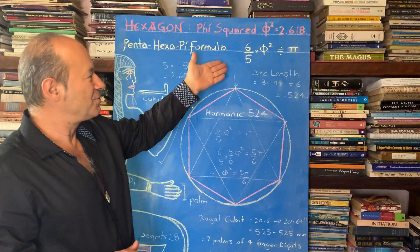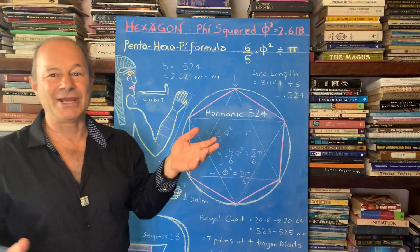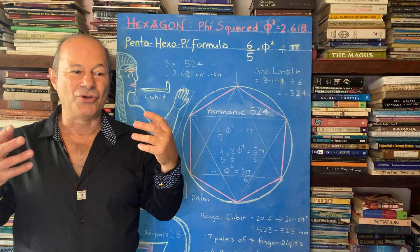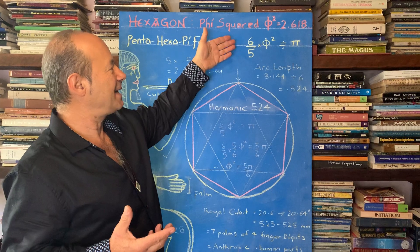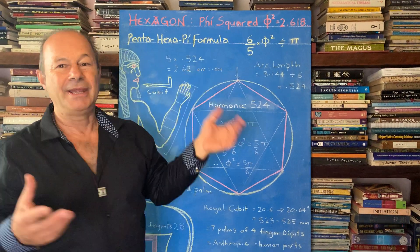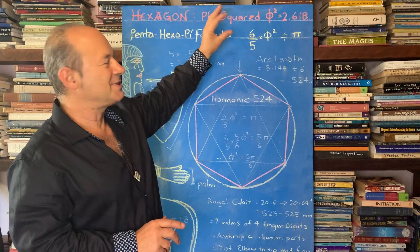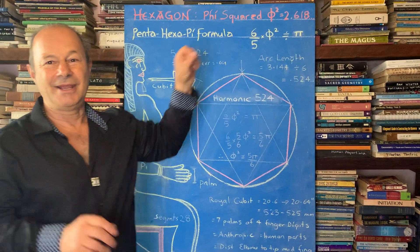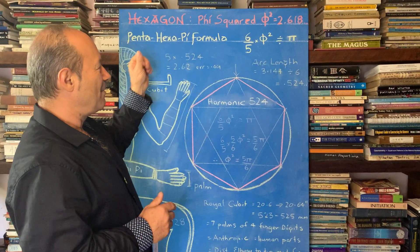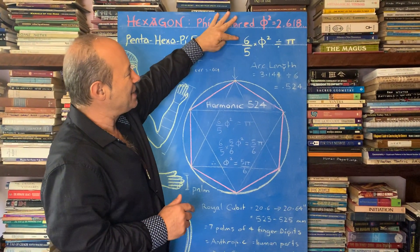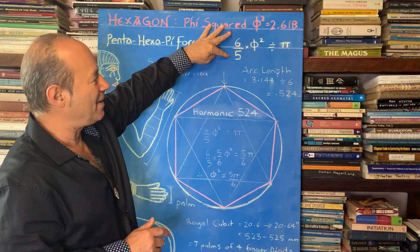The reason I'm introducing you to this concept of an equation is so that you're not frightened by it. If we can translate number into art, we're going to turn this equation into a picture. So obviously we've got a relationship between 6 and 5.